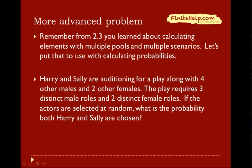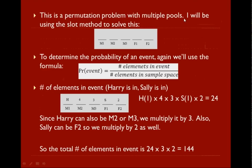You can see there are male roles and female roles, so this is a permutation problem with multiple pools. It's a permutation because order matters - the actors are distinguishable between themselves. I'll be using the slot method to solve this: male role 1, role 2, and role 3, then female role 1 and female role 2 for the 5 slots.